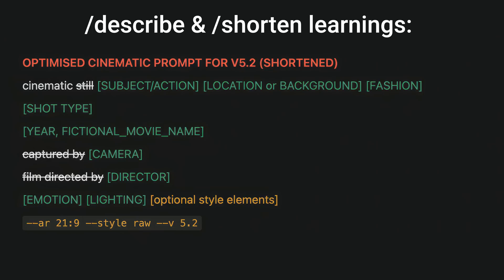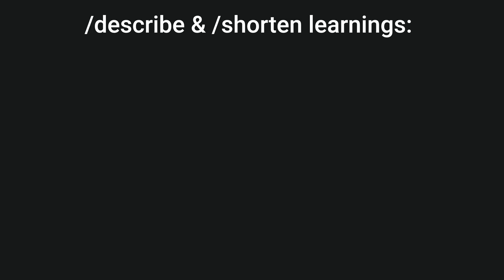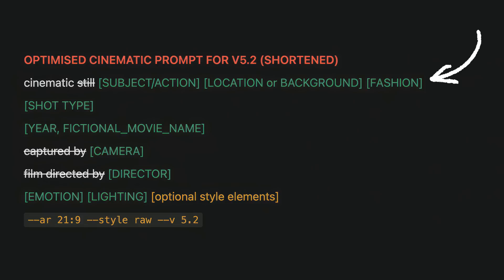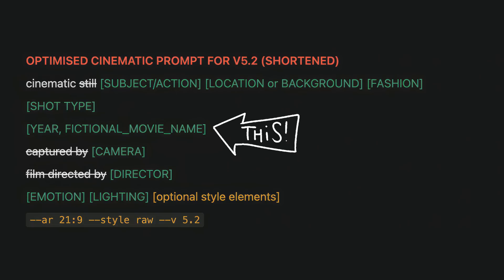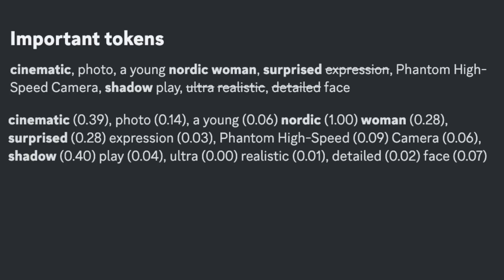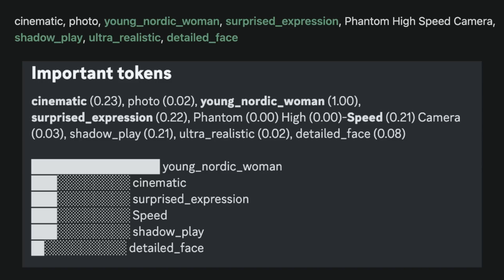For cinematic prompts, I combined syntax from describe and shorten to understand optimal Mid-Journey prompt structure. I removed words like 'still,' 'captured by,' and 'directed by' because they unnecessarily bloat prompts — elements like camera name and director name tend to rank high without those words. I moved critical elements like keywords describing the scene, subject, action, location, and fashion much earlier in the prompt to ensure Mid-Journey gives them maximum ranking. When using a fictional movie name, I used it with underscores. I also found that Mid-Journey sometimes separates adjectives from nouns, causing adjectives to receive lower rankings. Using underscores ensures Mid-Journey treats the whole cluster as one unit without separating them.